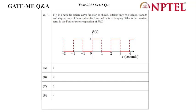Hello all, we are going to solve this question from year 2022 set 2 question 1 of GATE Mechanical Engineering paper. The question is as follows: F(t) is a periodic square wave function as shown. It takes only two values, 4 and 0.